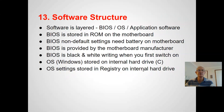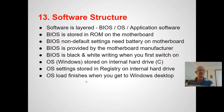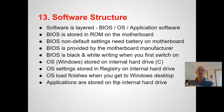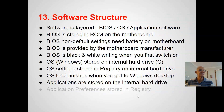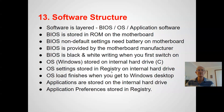The third layer is the applications — things like Google Chrome, Microsoft Edge, MS Word, MS Excel, Adobe Photoshop. These are also stored on the internal hard drive, the same as the operating system. The application preferences — the settings for those applications — are also stored in the registry. So the registry stores not only the operating system settings and preferences, but also the application software settings and preferences.